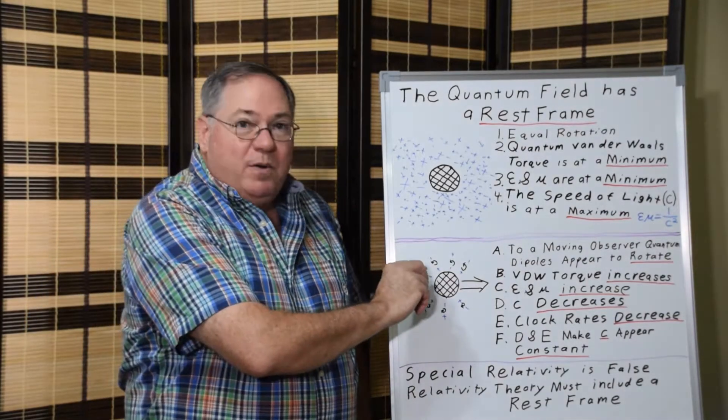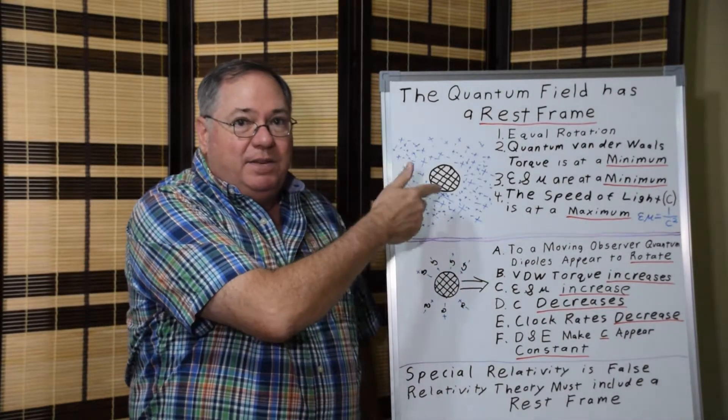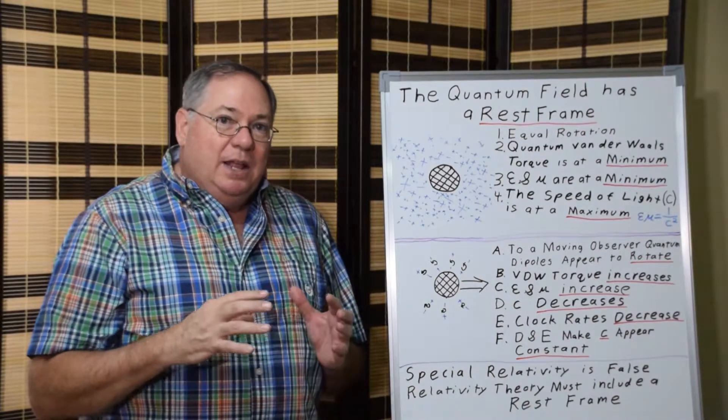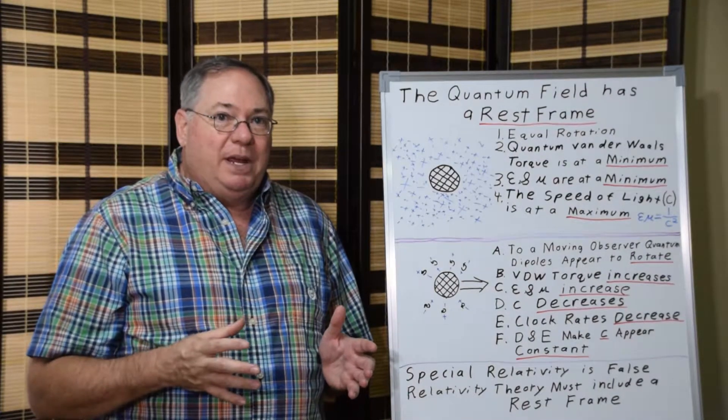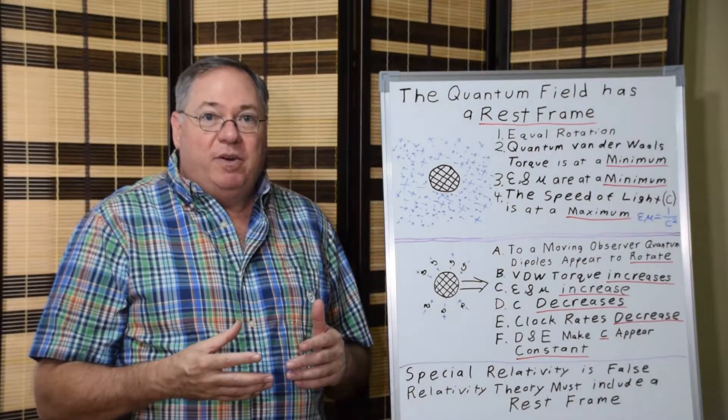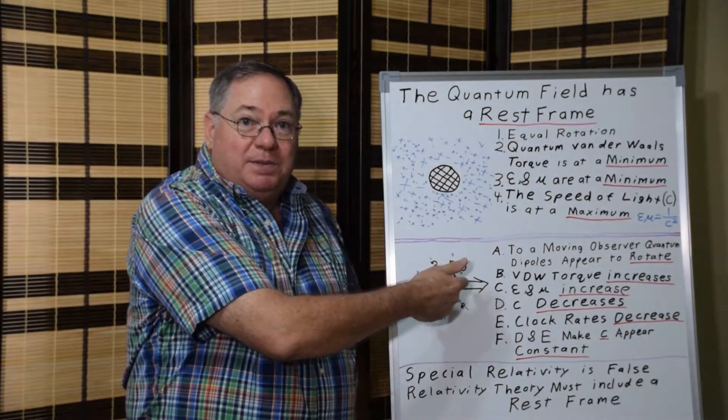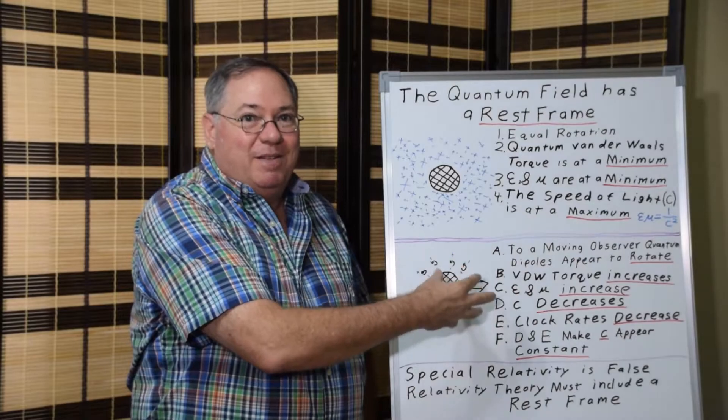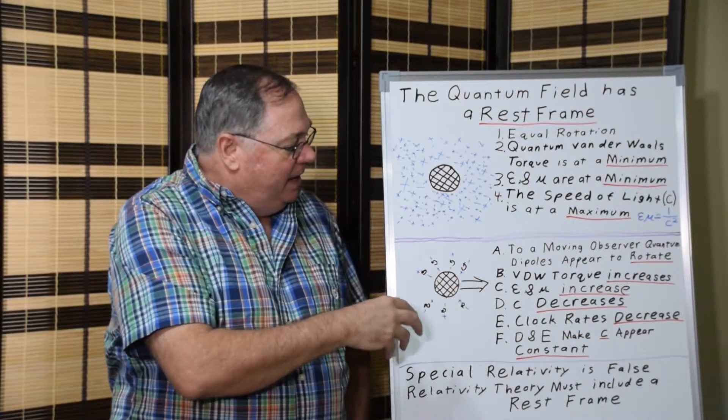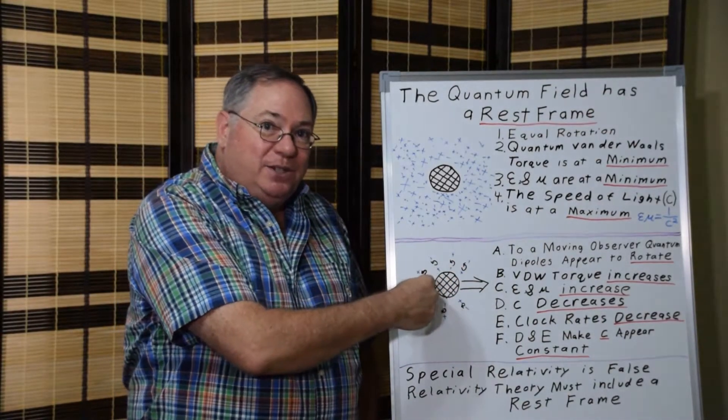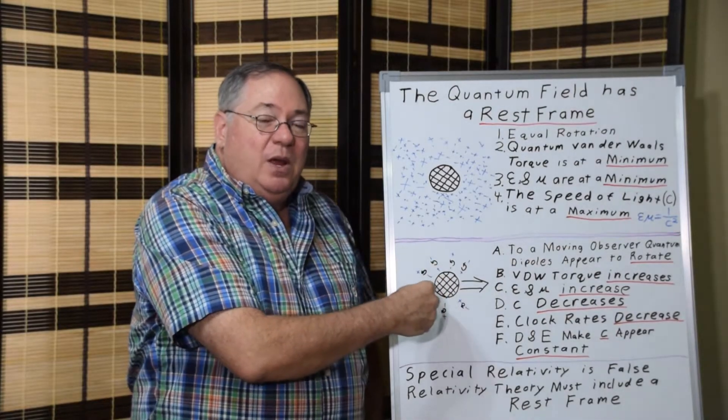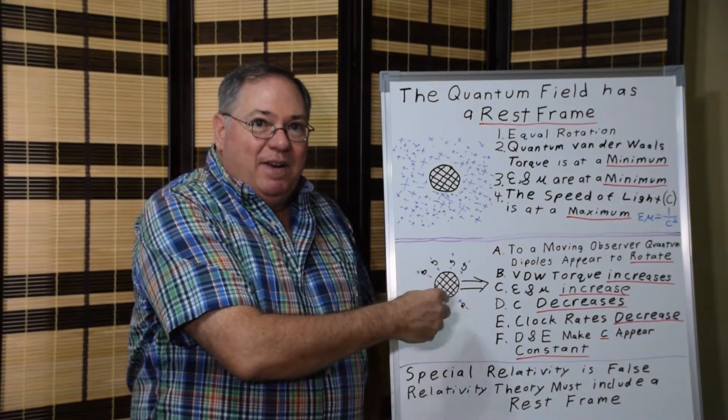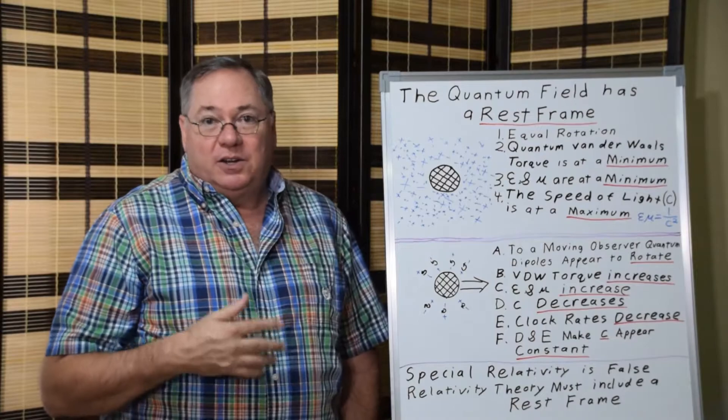Then if an object moves relative to these quantum dipoles, there will appear to be preferential rotation in one direction that's due to the motion of the object, not the motion of the rest frame of the quantum field. So it's impossible to have an object move without having this effective rotational effect occur.